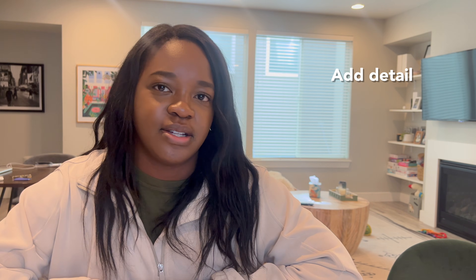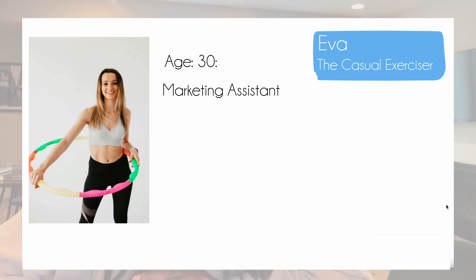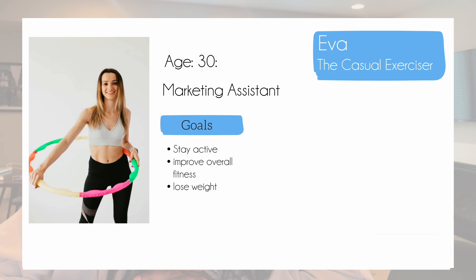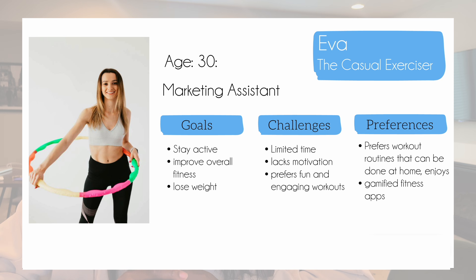Now let's go ahead and add a little bit more detail into who these people are. Let's take Eva, our example of the casual athlete. We're going to say that she is 30, her occupation is marketing assistant. Some of her goals are to stay active, improve overall fitness, and to lose weight. Some of the challenges she has: limited time, she lacks motivation, and she prefers fun and engaging workouts. Some of her preferences: she prefers workout routines that can be done at home, and she enjoys a gamified fitness app experience. I'd recommend taking all that information and really fleshing them out — give them a little bit of a story, add some visuals, and help really define who this person is.